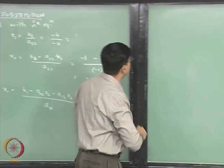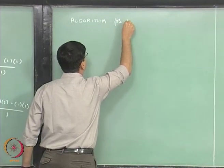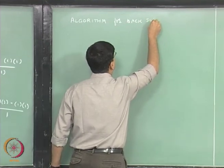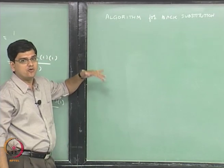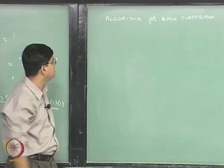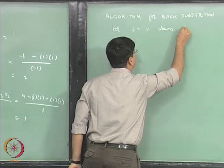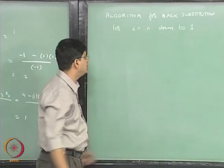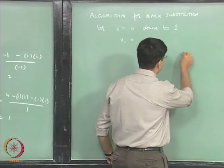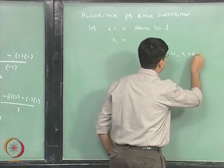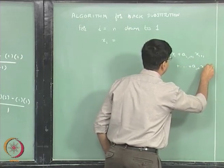This covers the algorithm for back substitution. In the back substitution step, we let i go from n down to n-1 and so on up to 1. For i going from n down to 1, we compute x_i. For the ith equation: a_ii x_i plus a_{i,i+1} x_{i+1} and so on up to a_in x_n equals b_i.